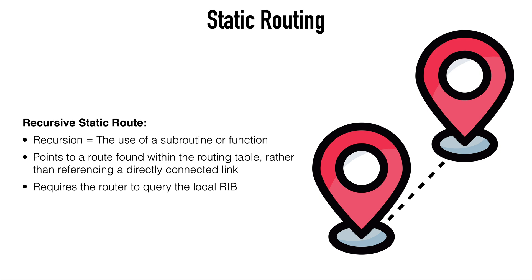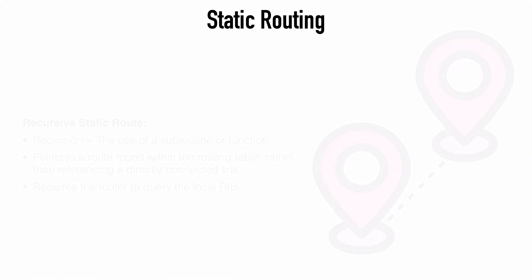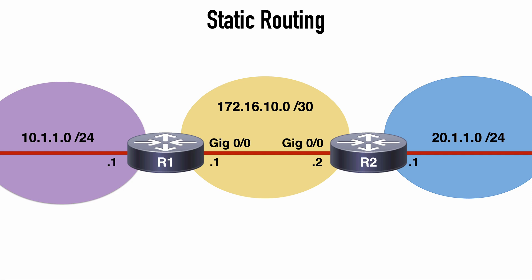The next classification of static routes are recursive static routes. You may be familiar with the term recursive or recursion from computer science theory or programming. Recursion is a programming technique involving the use of a subroutine, subfunction, or algorithm where there can be multiple repetitions processed until a specific condition is met. When talking about recursive static routes, very simply, these are routes that point to a different route within our routing table rather than pointing to a directly connected link. So if we look at our same topology with a recursive static route, rather than using the outbound interface, we're using a next hop IP address.